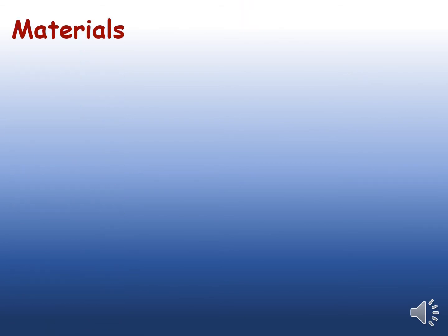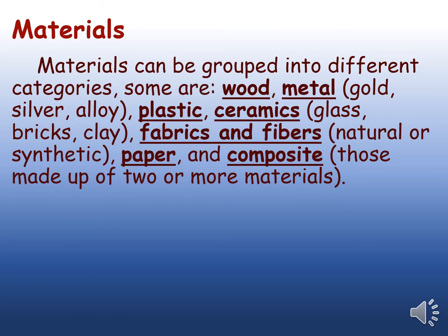Materials can be grouped into many different categories. Some of which are wood, metal, like gold, silver, and alloy. Alloy is a combination of two or more metals. Plastic, ceramics, which includes glass, bricks, clay, and cement.